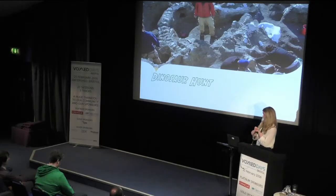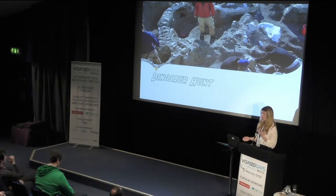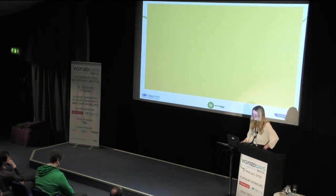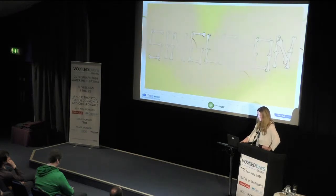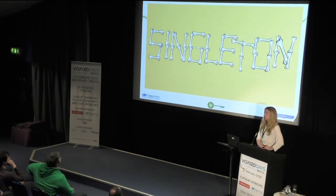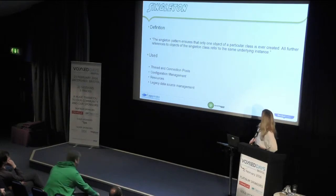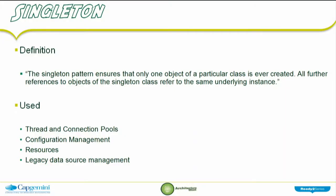With these concepts in mind - divergence, vestigial functionality, and understanding that things change because environments change - we can go on our dinosaur hunt. I've got five dinosaurs to reveal today. The first is the singleton pattern. A brief definition: the singleton pattern ensures that only one object of a particular class is ever created; all further references to objects of the singleton class refer to the same underlying instance.